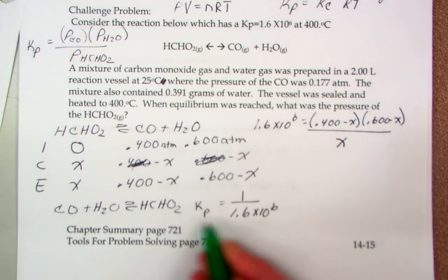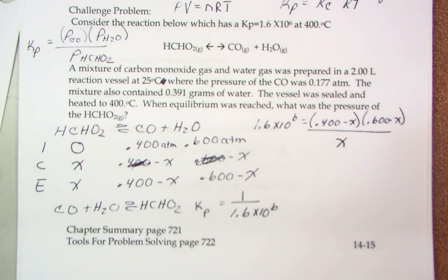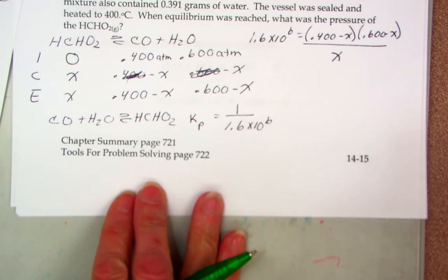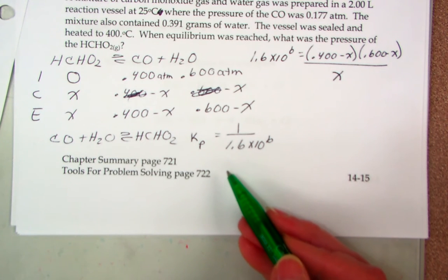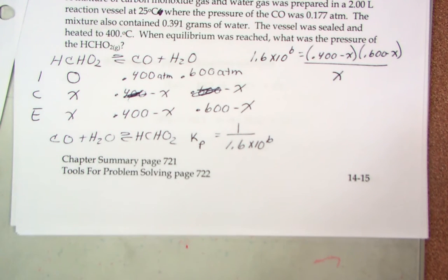So isn't this the real chemistry? 1 over 1.6 times 10 to the 6th. So is this number small? Yes. So can I ignore x? You bet.